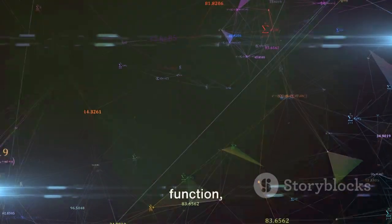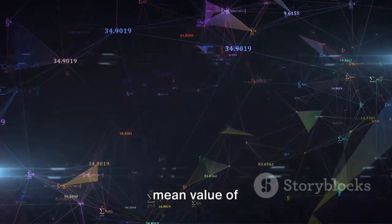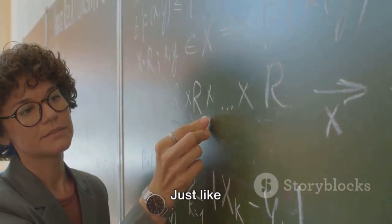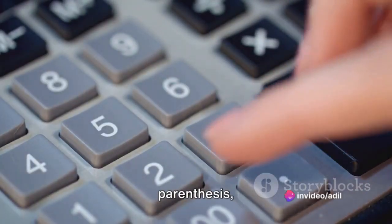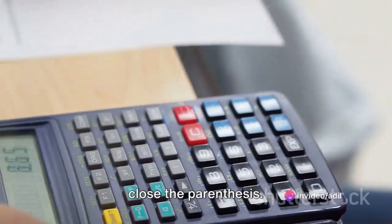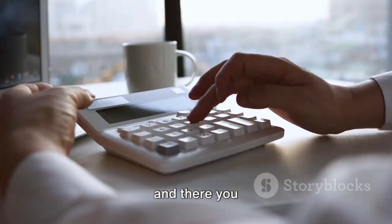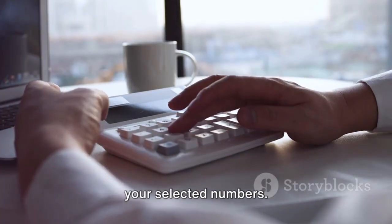Moving on to the average function, which calculates the mean value of a group of numbers. Just like sum, you start by typing equal sign average. Open a parenthesis, select your range of cells, and close the parenthesis. Hit enter, and there you have it. The average of your selected numbers.